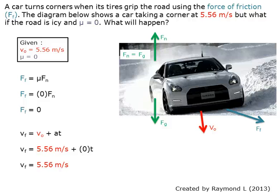A car turns corners when its tires grip the road using the force of friction. The diagram below shows a car taking a corner at 5.56 meters per second, but what if the road is icy and the coefficient of friction equals zero, what will happen?